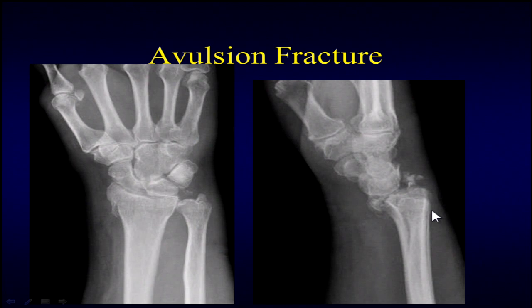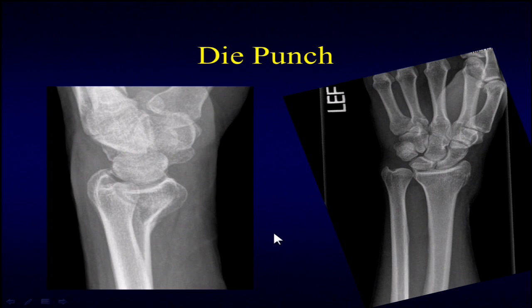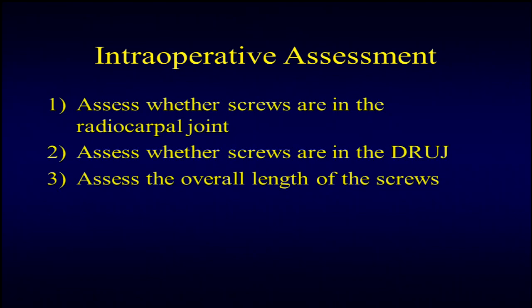There are also avulsion fractures. Somewhat counterintuitively, to reduce these in the emergency room for temporizing splinting, you want to flex the patient to roll back the scaphoid and get it back into the fossa. If you're going to fix these, they typically require something more like a spanning dorsal plate or an external fixator. Also remember to look for die punch fractures and that step-off, even when something isn't always obvious.